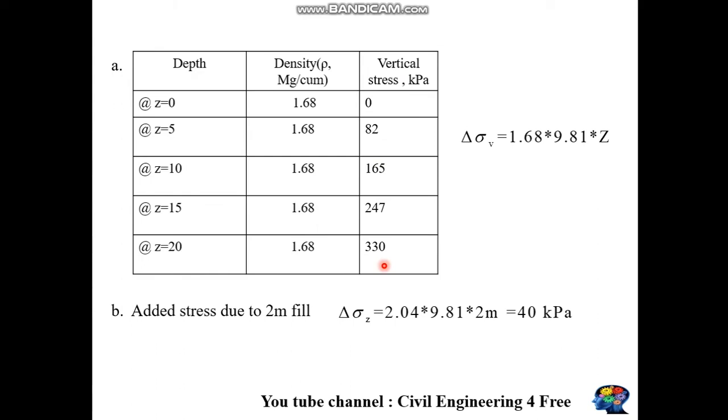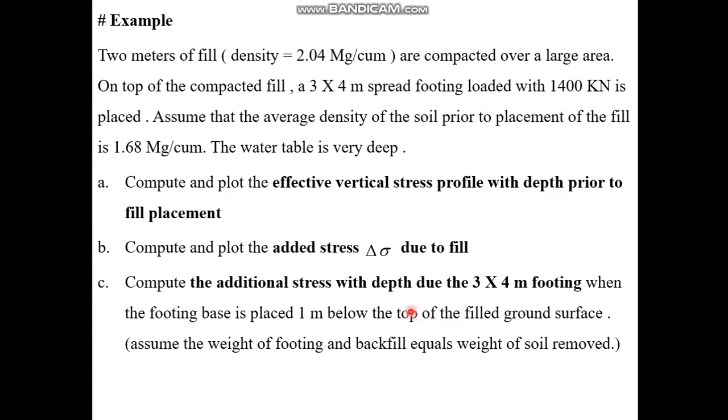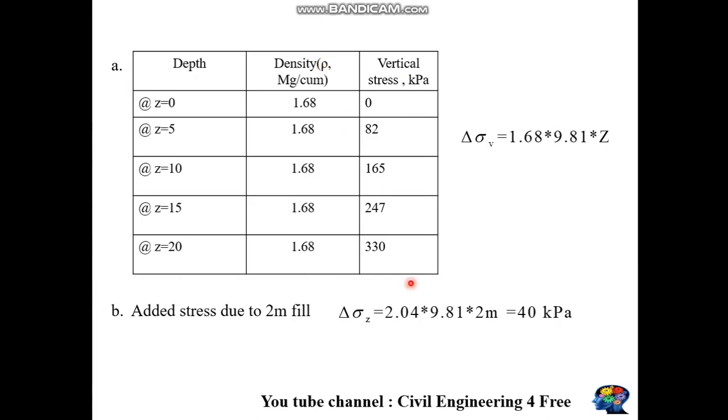Part (b): What is the vertical stress due to fill placement? After compaction, the density increases from 1.68 to 2.04 Mg/m³. So, 2.04 × gravity × 2m fill depth equals 40 kPa. This stress is constant.